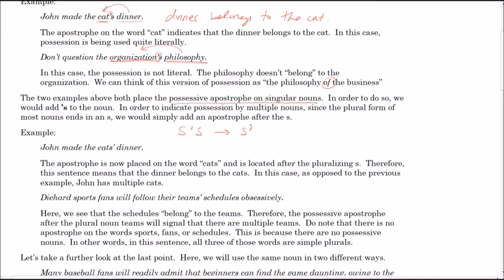There is an exception because certain singular nouns end in S — typically names or a word like 'news.' In that case we can do it either way, but generally we'll just use S-apostrophe. For example, 'John made the cats' dinner' — here the apostrophe is after the S, so the dinner belongs to multiple cats, not one. The easiest way to check is to see what is to the left of the apostrophe: one cat, one organization, or many cats.